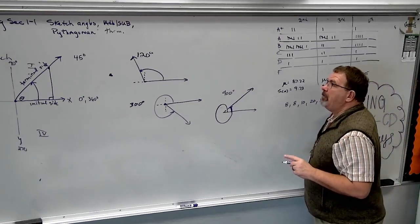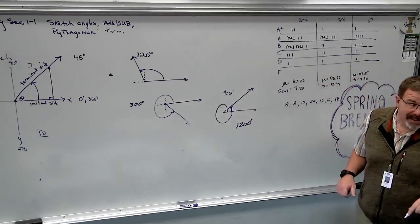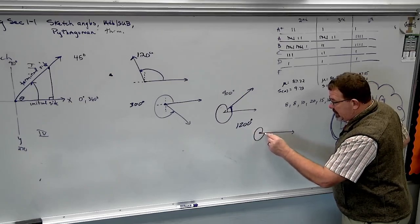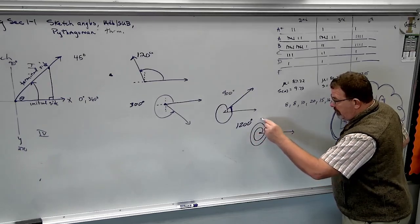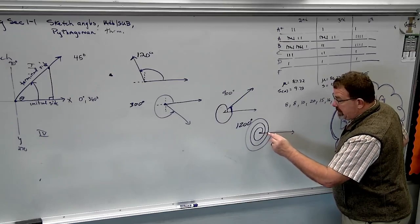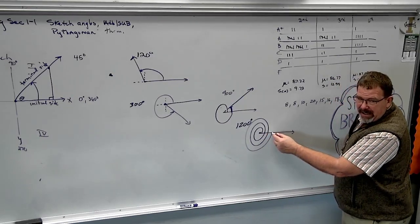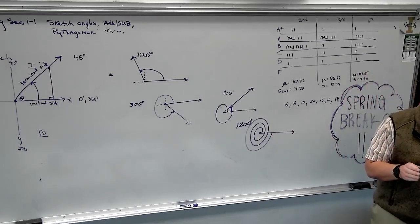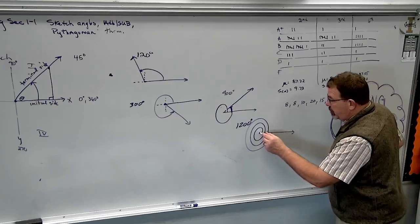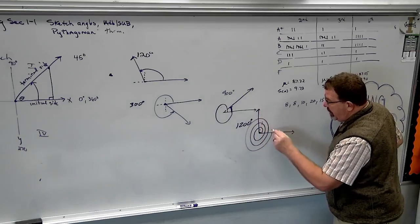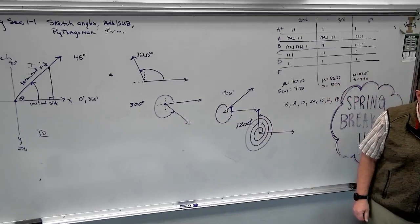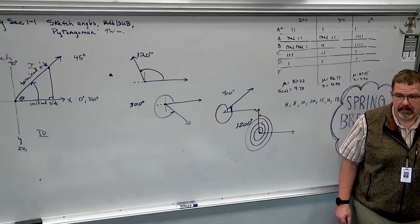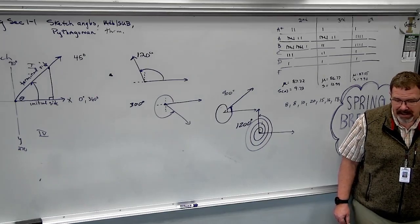How about a 1,200-degree angle? Let's count rotations: 360, 720, 1080. You skateboarders and snowboarders — aren't guys on snowboards doing 1080s in a half pipe? That's three rotations. Now, how much further do I have to go? I'm at 1080, so I need 120 more. Here's 90; I'd estimate it right about there. This would be a 1,200-degree angle. Just make your rotations — 360, 720, 1080 — then subtract 1080 from 1200 to get 120 more.